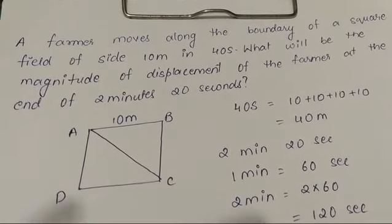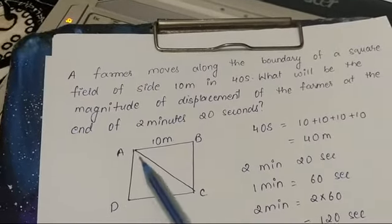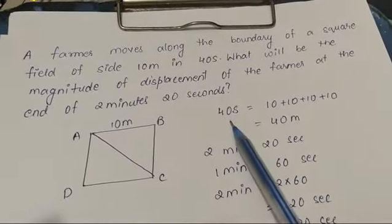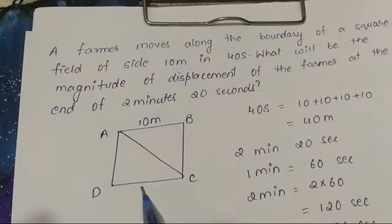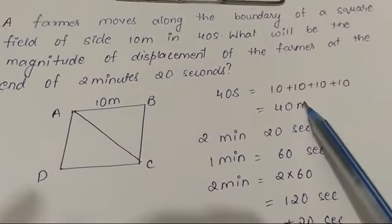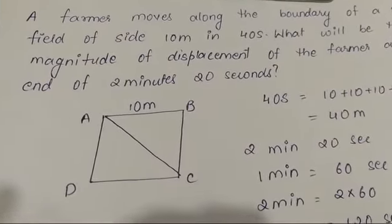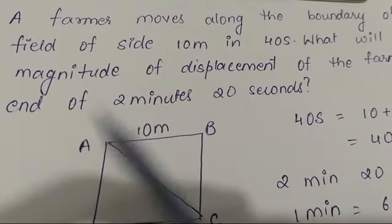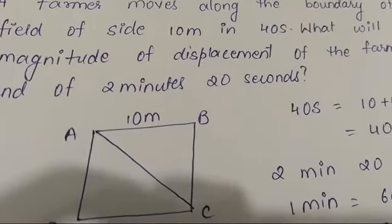What will be the magnitude of displacement of the farmer at the end of 2 minutes and 20 seconds? So here, a farmer has a square field. One side of that square field is 10 meters. The farmer takes 40 seconds to go around the entire field, meaning he traveled 10 plus 10 plus 10 plus 10, that is 40 meters. Now the question is, what will be the magnitude of displacement in 2 minutes and 20 seconds?